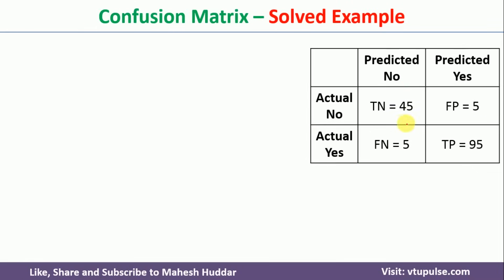First we will give names to each of these numbers. This 45 — these 45 examples are of type no and were predicted as no, so that is a true negative. These 5 examples are actually of type no but predicted as yes, so these are false positives. These 5 examples are actually of type yes but predicted as no, so that is false negative. And these 95 examples are of type yes and were predicted as yes, so that is true positive.